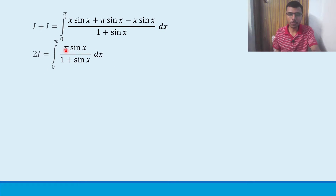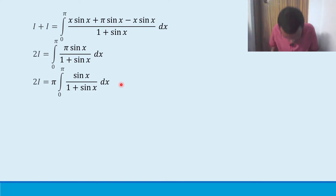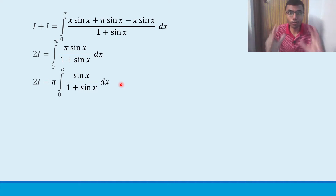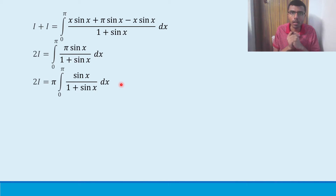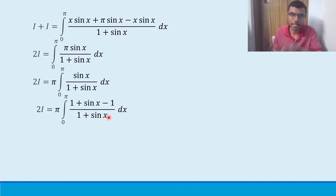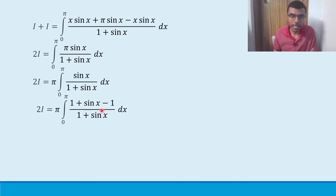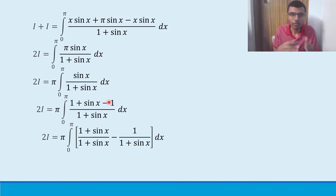Since π is a constant, bring it outside: 2I = π · integral from 0 to π of sin(x) / (1 + sin(x)) dx. Stay attentive from here — I'm going to introduce some new techniques. First, add and subtract 1 in the numerator: write sin(x) as (1 + sin(x) - 1). Then split: (1 + sin(x)) / (1 + sin(x)) minus 1 / (1 + sin(x)).